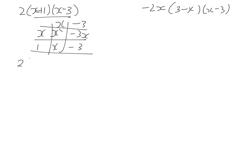We write this all out with our 2 out the front. So we have x squared minus 3x plus x minus 3. Collect like terms. x squared minus 2x minus 3.